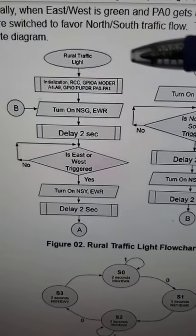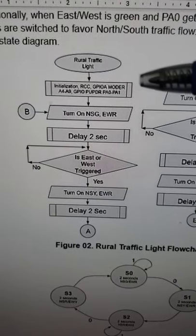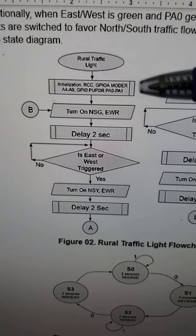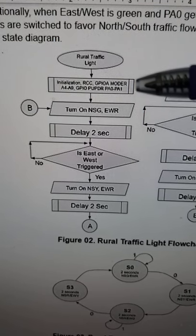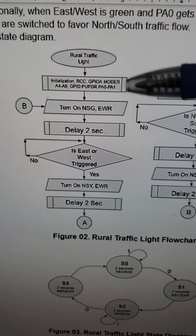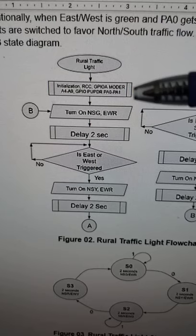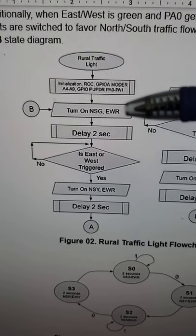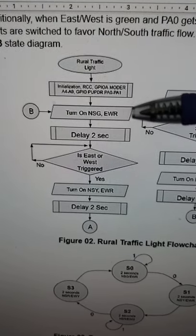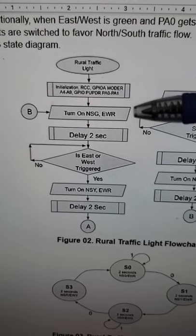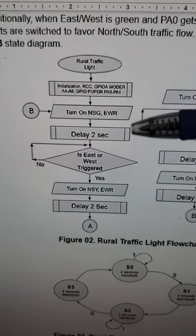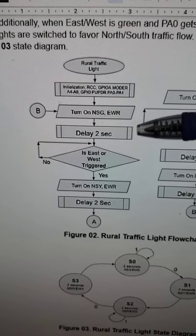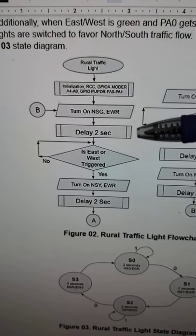The rural traffic light system code initializes and turns on the GPIO clocks, as well as the pull-up and pull-down resistors. It starts initially with the north-south green and east-west red, then delays for two seconds, which allows for a safety period for any cars.